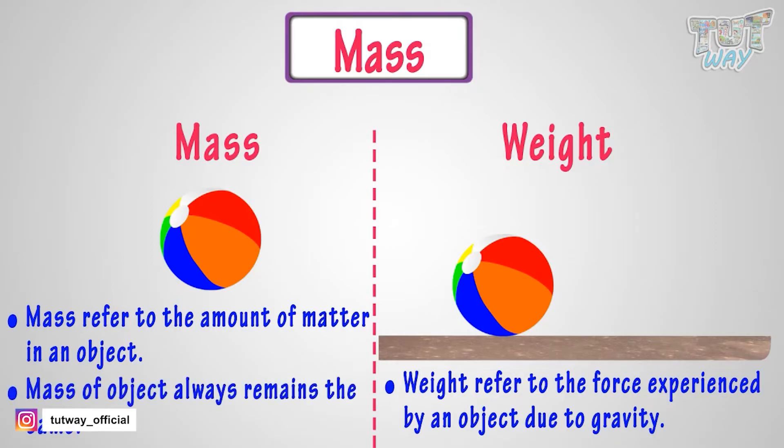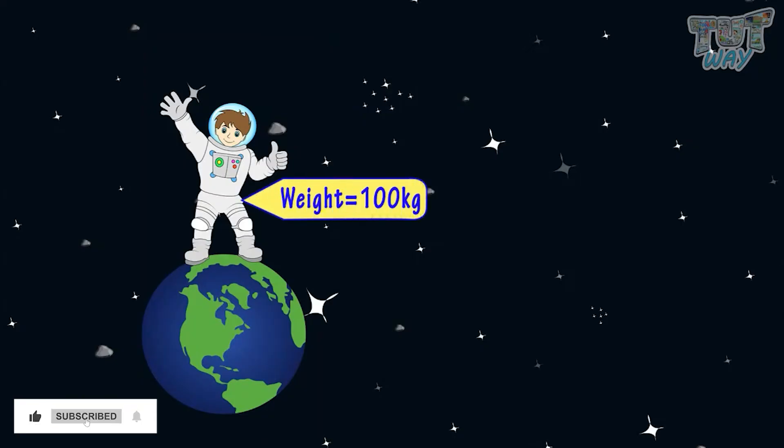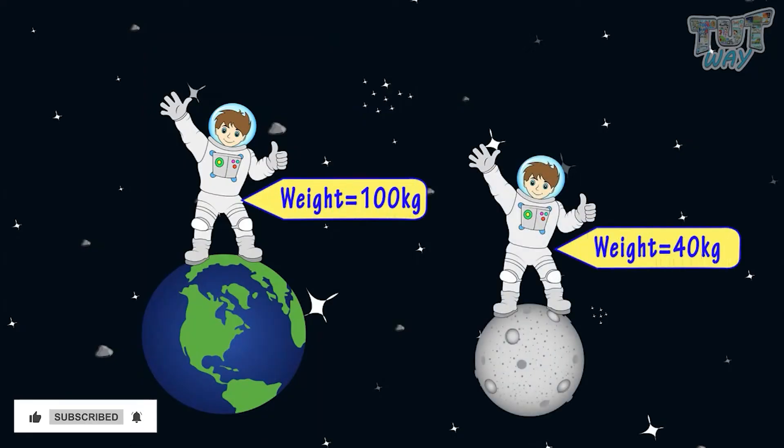Mass of objects always remains the same, but the weight of objects can change depending on where you are. Like for example, your weight on Earth will be different from your weight on the Moon. We will study more on the difference between mass and weight in science.